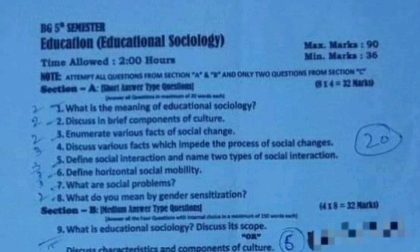Question number 1: what is the meaning of Educational Sociology? Question number 2: discuss in brief the components of culture. Question number 3: enumerate various factors of social change. Question number 4: discuss various factors which impaired the process of social changes.